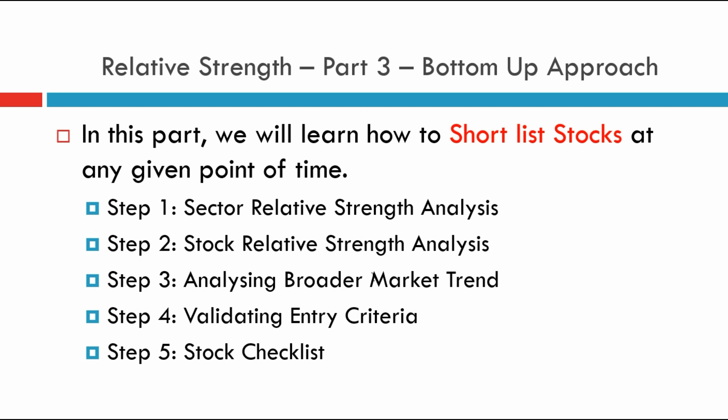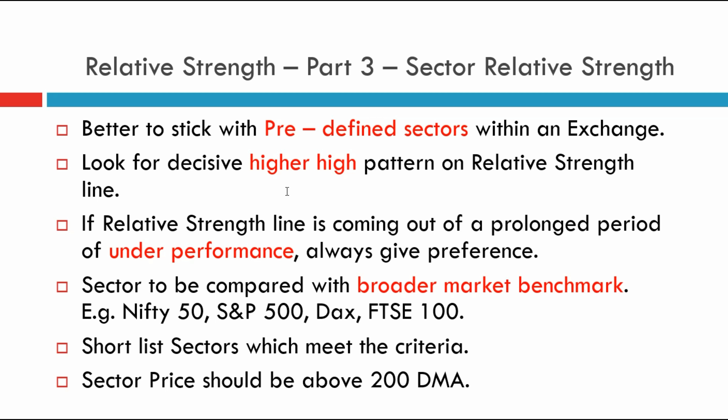Hi guys, this is the third part of the relative strength analysis series. In the first two parts we covered the basics of relative strength and how to shortlist the strongest sectors. In this part we'll be focusing on a bottoms-up approach — selecting a strong sector, then going down to select the strongest set of stocks within those sectors, and covering some rules that have to be applied.